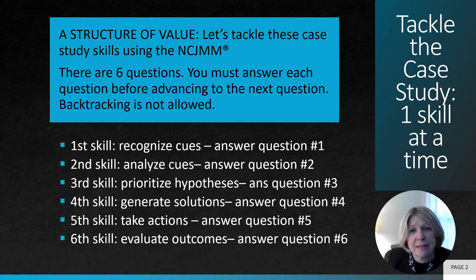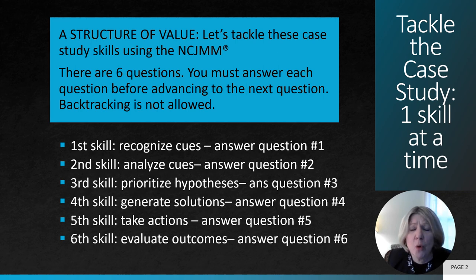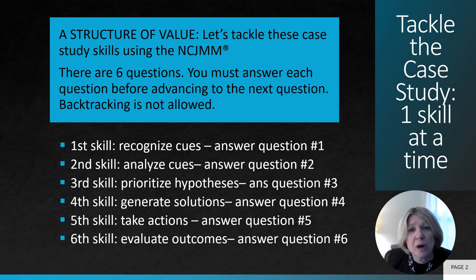We'll be recognizing cues within the clinical presentation and within any chart tabs that are provided. We'll be analyzing those cues. We'll then be developing what could be going on with this patient as prioritizing hypothesis. We'll generate solutions, take actions, and evaluate outcomes. I can make this more clear by going through the clinical judgment measurement model steps within a bow tie question.